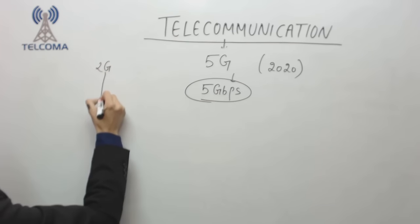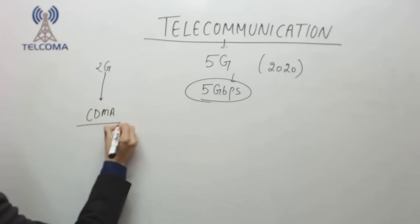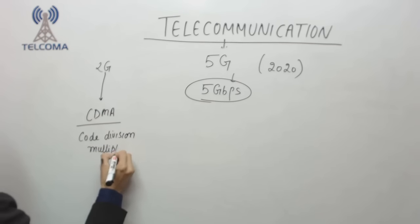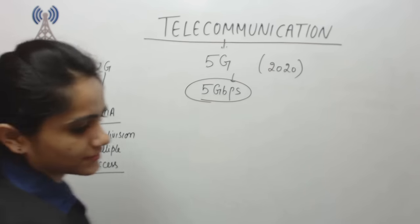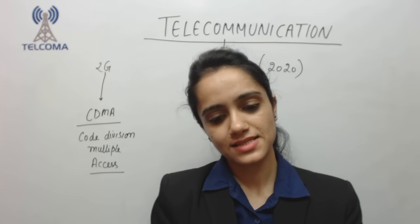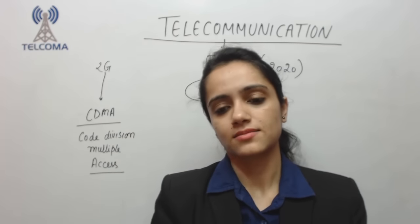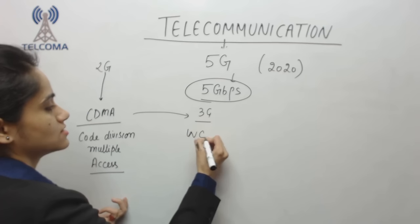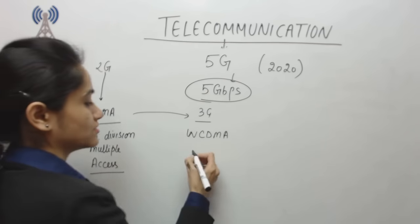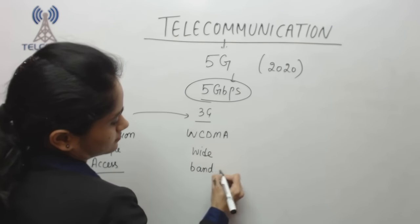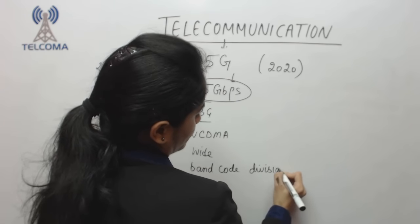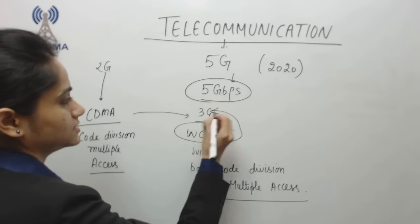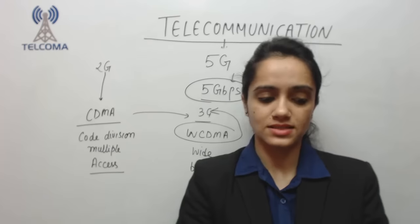In parallel, starting from 2nd generation, there is another technology called CDMA — Code Division Multiple Access. CDMA technology has its own patent and is prominent in some countries like the US, while other countries use GSM. CDMA is also part of the 2nd generation. For 3G, the concept evolved into WCDMA — Wideband Code Division Multiple Access — which is used in 3G networks.